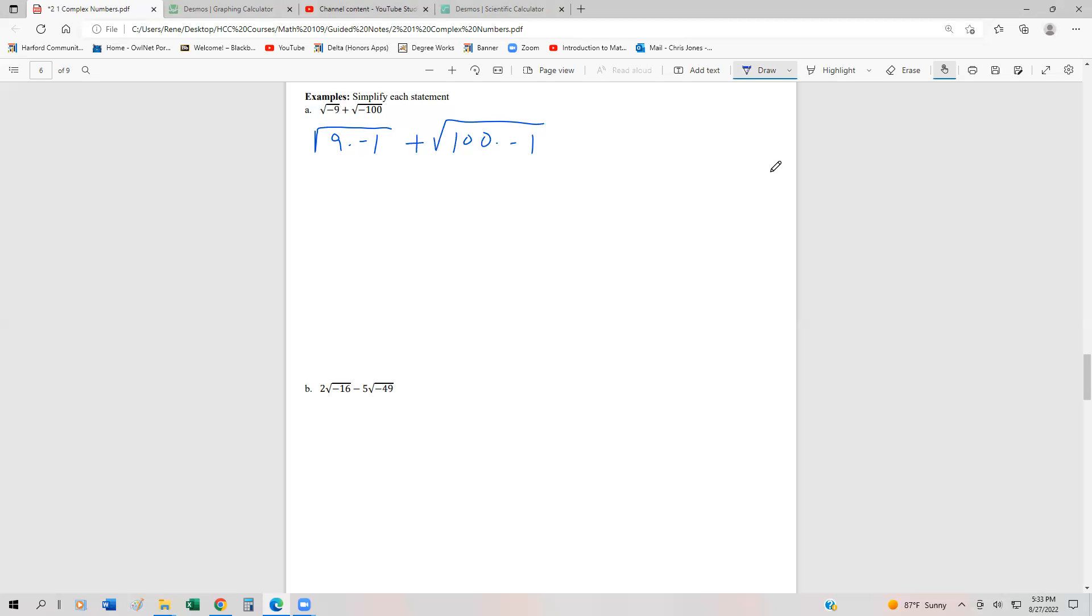Now, that doesn't work with sums and differences. So this is the square root of 9 times the square root of negative 1 plus the square root of 100 times the square root of negative 1. We know the square root of 9 is 3. We know the square root of 100 is 10.